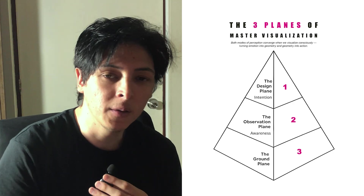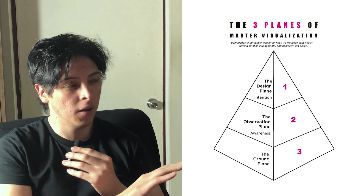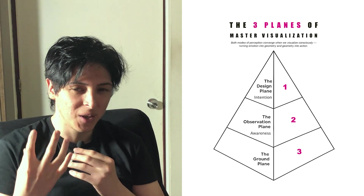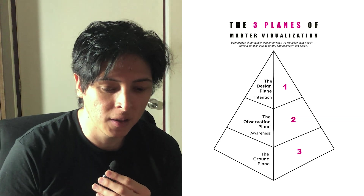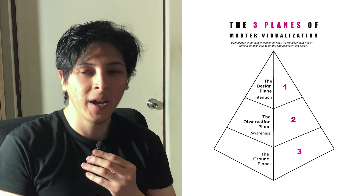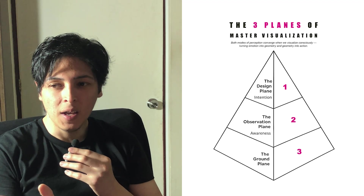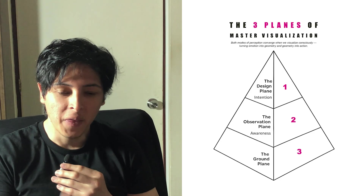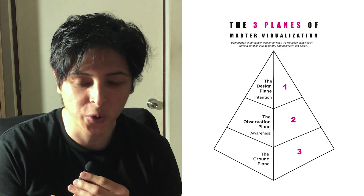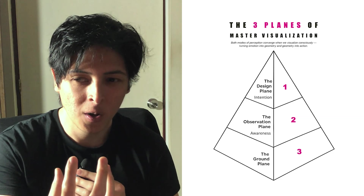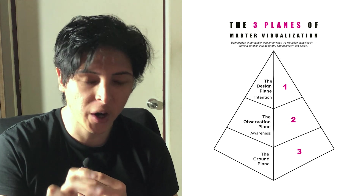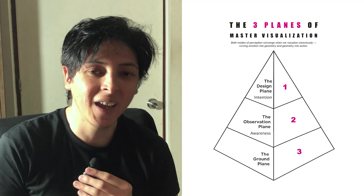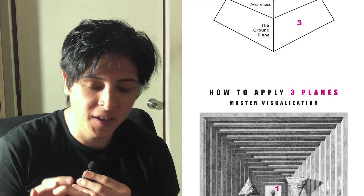We have the ground plane — where most people think about the visual field as a great context, but they cannot observe something in a specific combination to understand it. Then you have the observation plane, like awareness, where designers, architects, scientists, and philosophers operate. This is the way we can decode visualization. But then you have the design plane — visualization with intention — where you focus on one object or one simple frame and build all the context across different levels of the first frame.